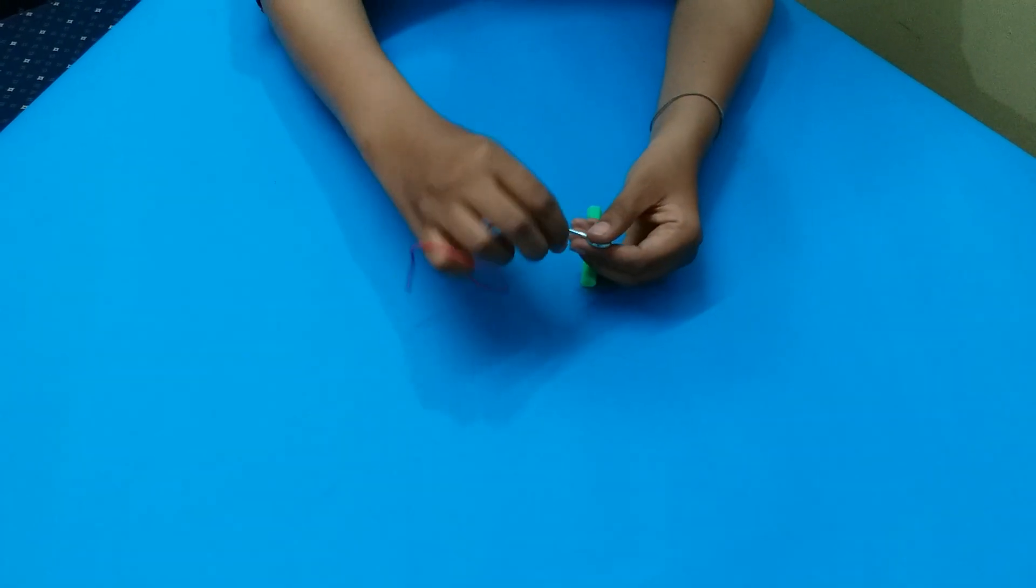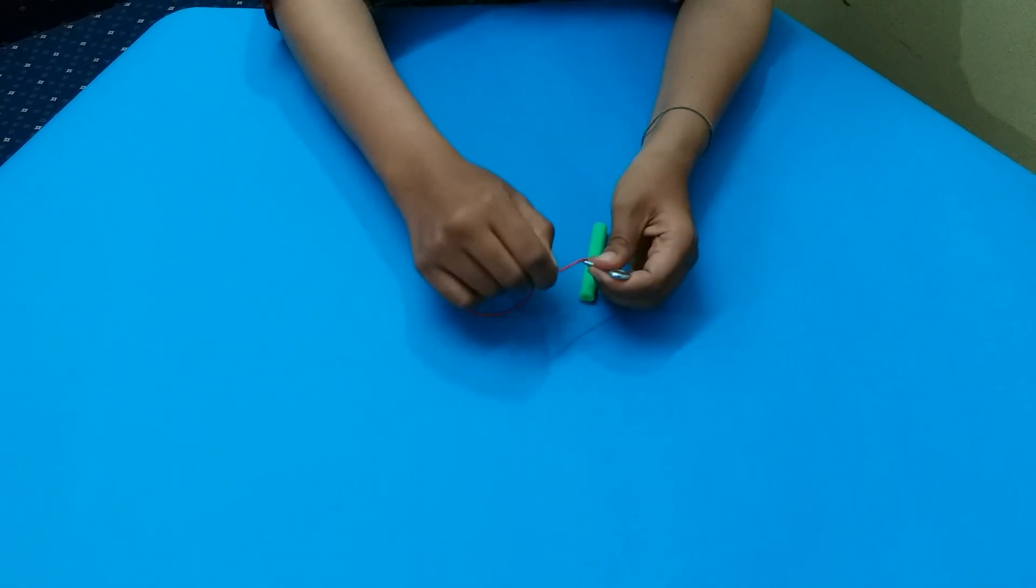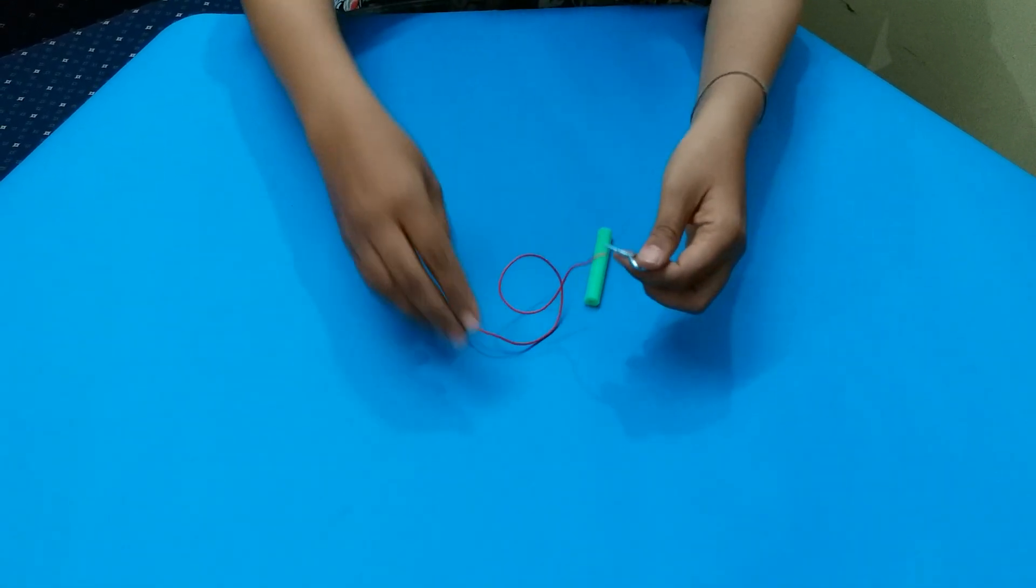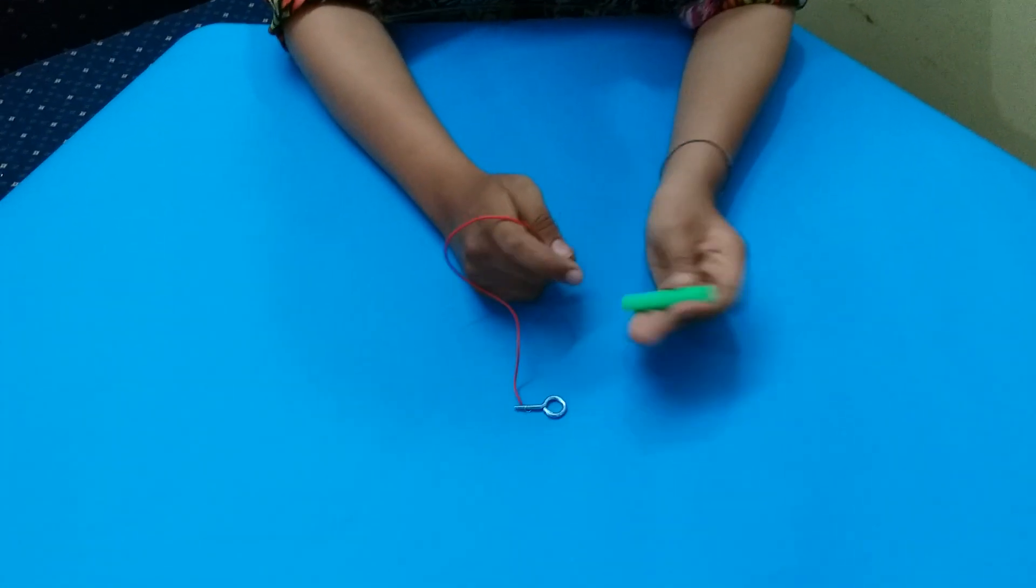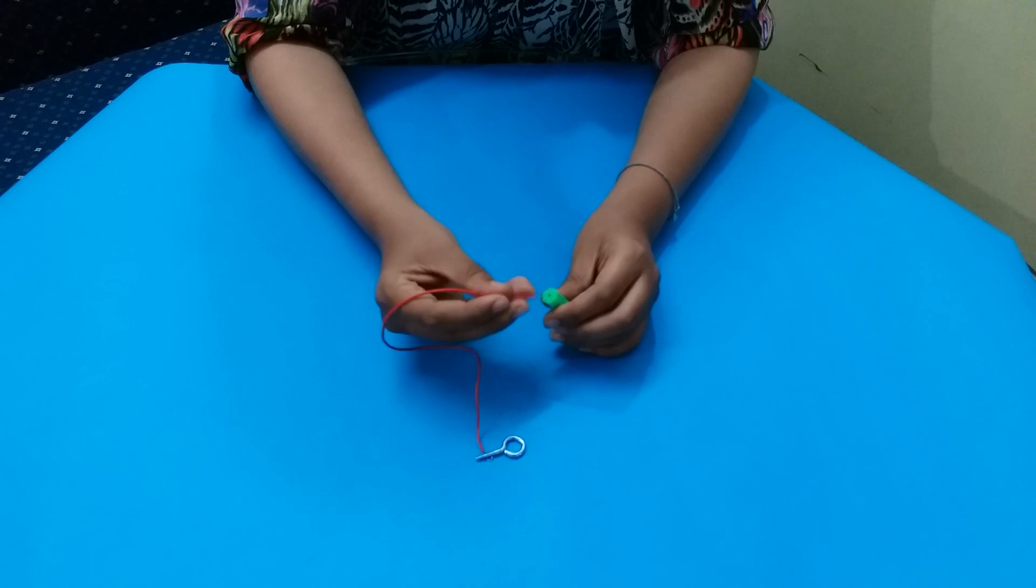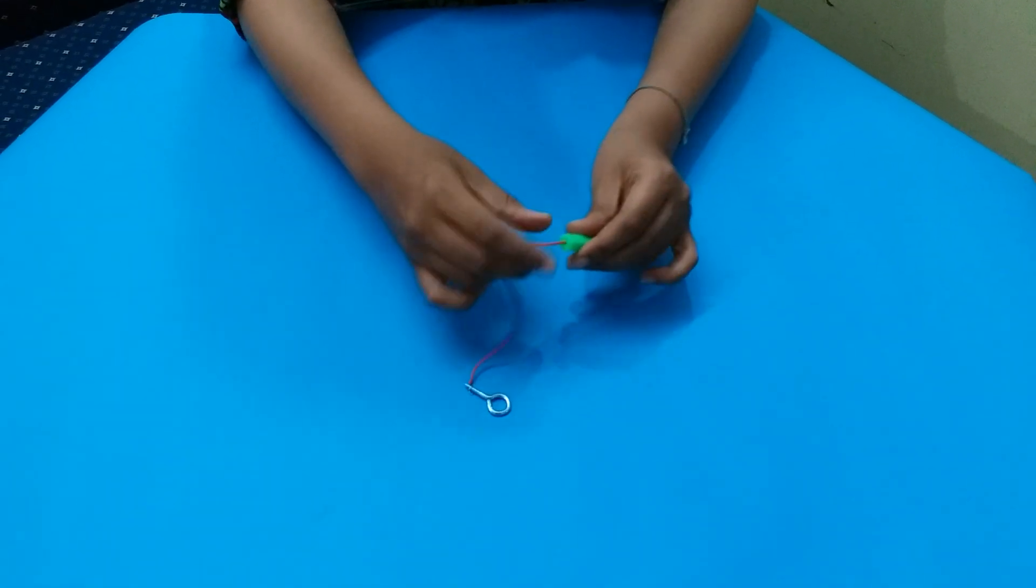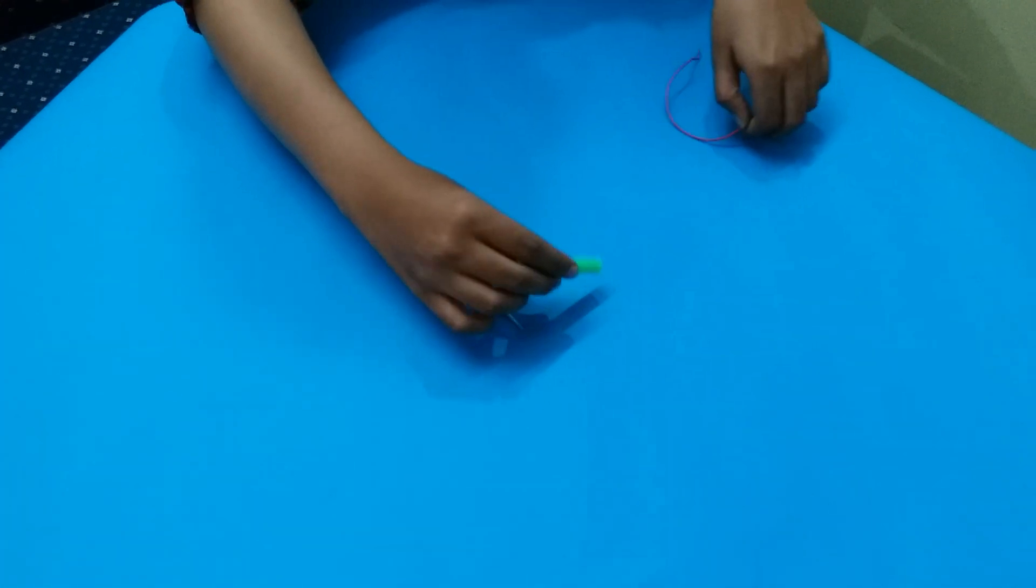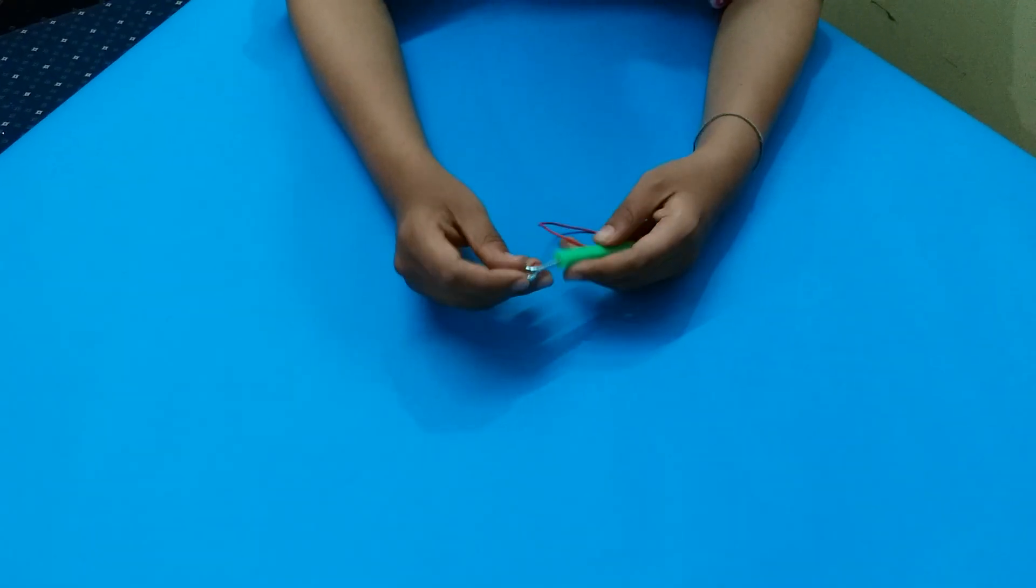Take the hook, wind the wire around the hook. You can see holes on the plastic tube. Pass the other end of the wire through these plastic holes.